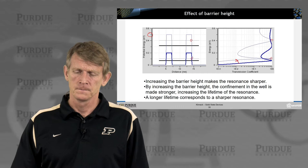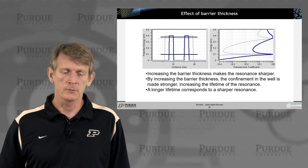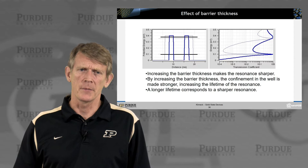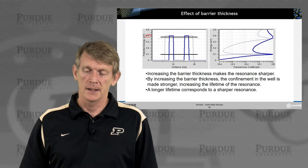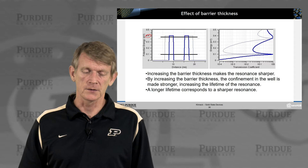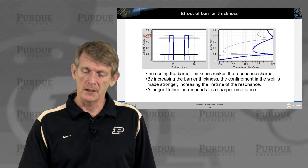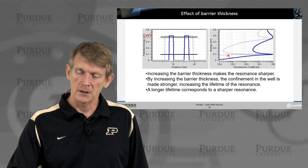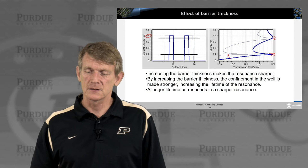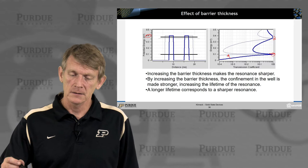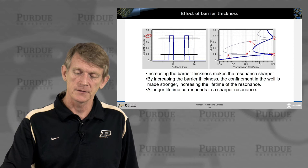Now let's look at a case where we vary barrier thickness rather than barrier height. The barrier height is fixed at 0.4 eV, and we compare a barrier thickness of 5 nanometers versus 8 nanometers. Comparing the dark blue to the light blue, the attenuation becomes stronger. The transmission reaches one at roughly the same energy for the lowest resonance, moving down just a little in energy. You still get perfect transmission at certain energies, and the attenuation between resonance states gets much stronger as you make the barriers thicker.